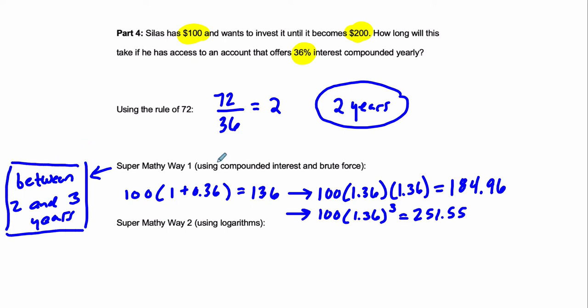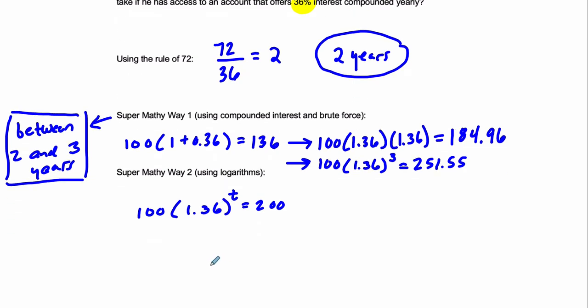And then to get a more precise measure using logarithms, we can say that you start with $100. You multiply it by 1.36. That's the 1 plus the 36 percent, some amount of years, and you want to get 200. So we start to solve for t. Divide both sides by 100. 1.36 to the t equals 2.